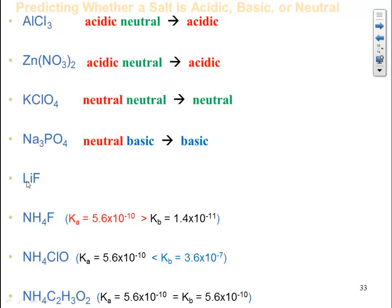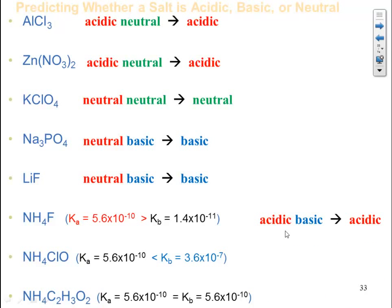Lithium fluoride: Is lithium one of the neutral cations? Yes. Is fluoride one of the neutral anions? No — so it adds basicity. Therefore the overall salt is basic. For ammonium fluoride: Is ammonium one of the neutral cations? No — it adds acidity. Is fluoride one of the neutral anions? No — so it adds basicity. We have both acidic and basic components, so we compare Ka and Kb. In this case, Ka is larger than Kb, meaning more hydronium is formed. Therefore, ammonium fluoride is an acidic salt.